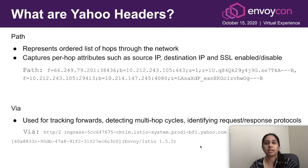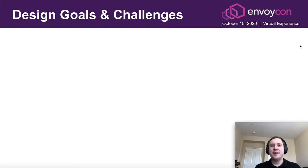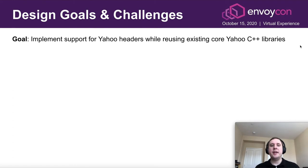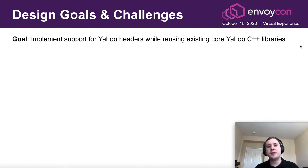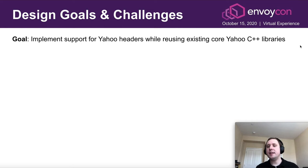I'd now like to pass it to my co-presenter Michael, who will talk about our design goals, challenges, and the architecture we came up with. The primary goal was to implement support for Yahoo headers while reusing the existing core Yahoo C++ libraries. We have a Yahoo connection plugin for Apache Traffic Server that has the RS header validation and generation flows in place — the main idea was to reuse that functionality, stay up to date with any changes, and benefit from any security fixes.